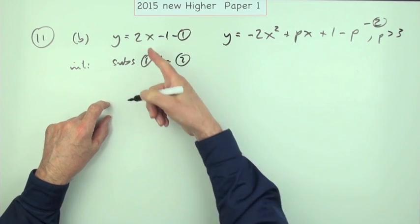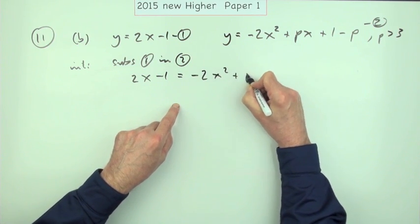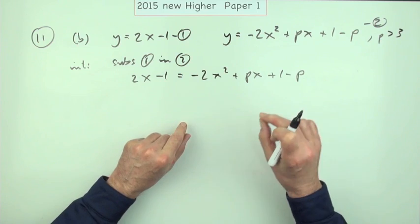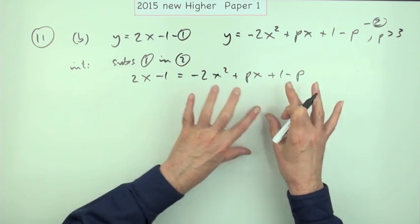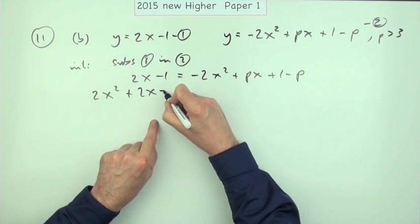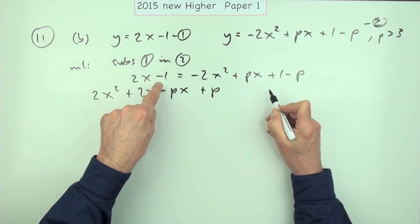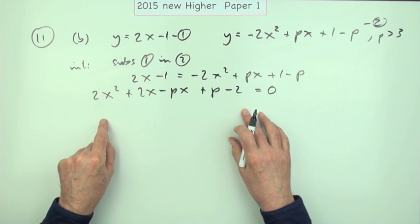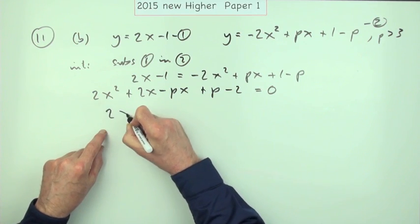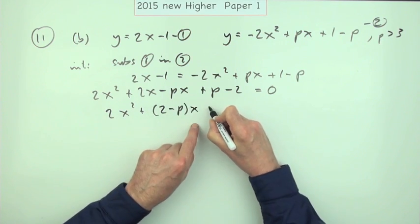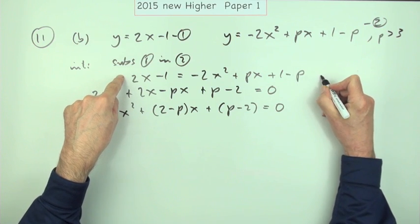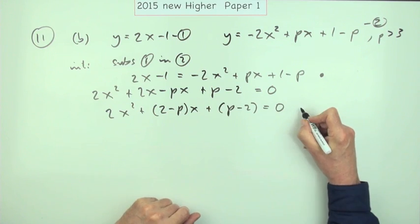Substituting gives: 2x minus 1 equals negative 2x squared plus px plus 1 minus p. This should be a quadratic equation with just one solution — one pair of equal roots. Bringing everything to one side: 2x squared plus 2 minus p times x plus p minus 2 equals 0. Substituting to find the point of intersection was one mark, and tidying it into the quadratic was the second mark.